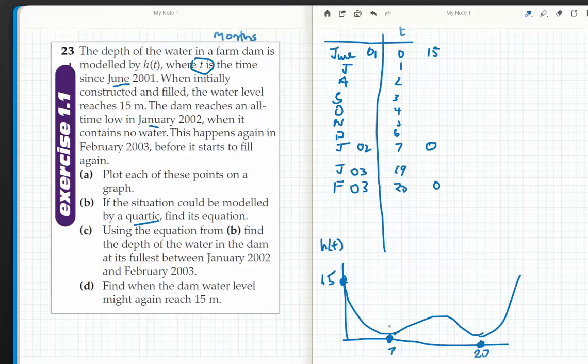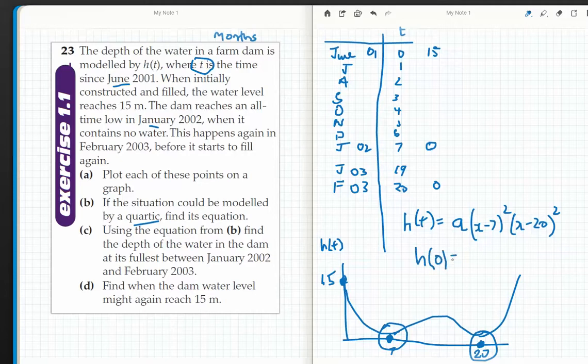My general rule for the quartic - because I know it touches at 7 and touches at 20 - I know that H of T is going to equal some dilation A times (X minus 7) squared times (X minus 20) squared. And I know that H of 0 equals 15. This is the piece of information I haven't used. And because it reached an all-time low and contains no water and it happened again in 2003, I know that they are touchings.